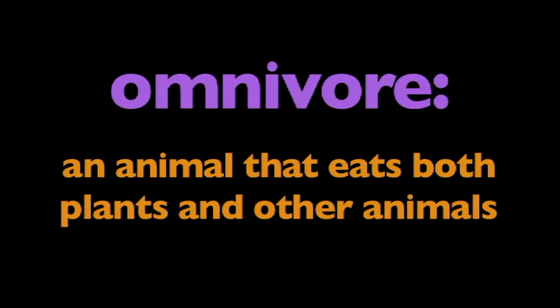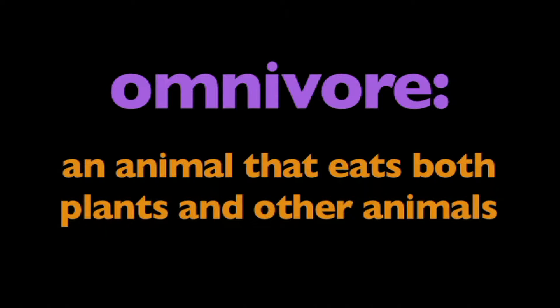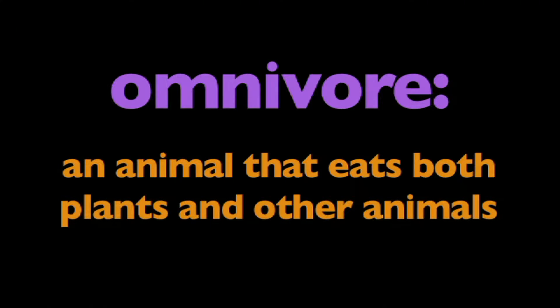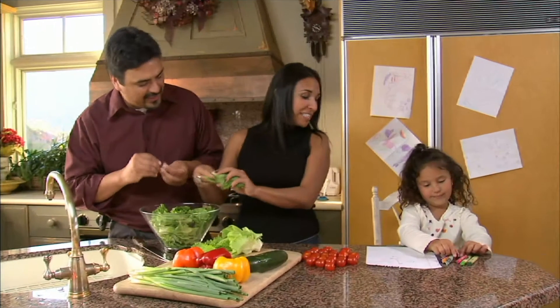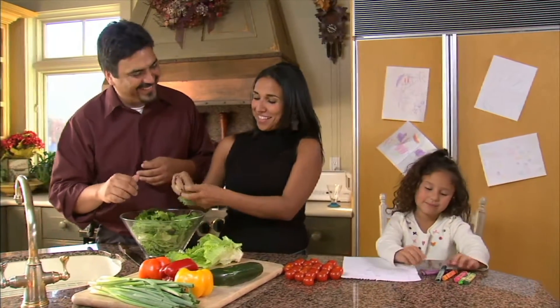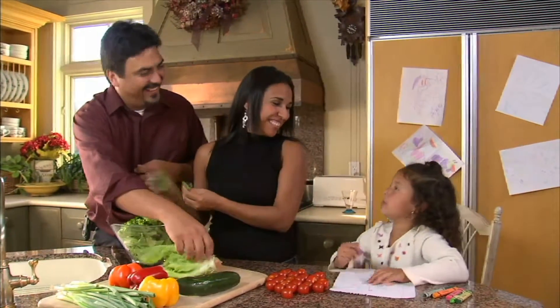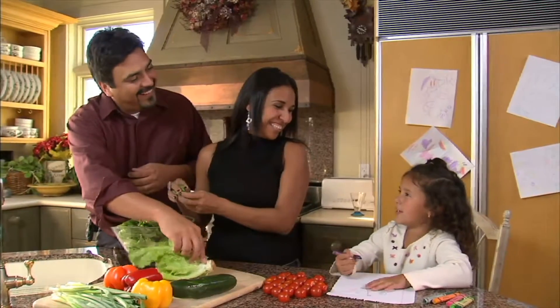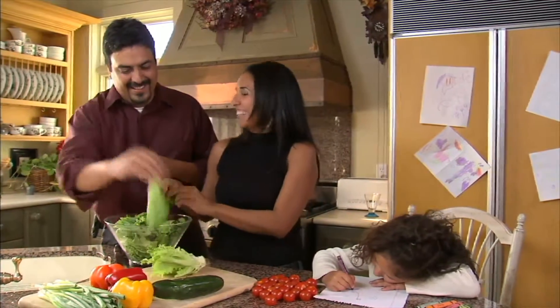In this program, we're going to learn about omnivores. What is an omnivore? An omnivore is an animal that eats both plants and other animals. Humans are just one example of an omnivore. Most people eat meat and plants, including fruits and vegetables.